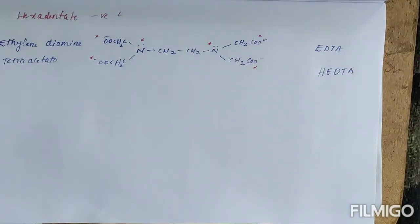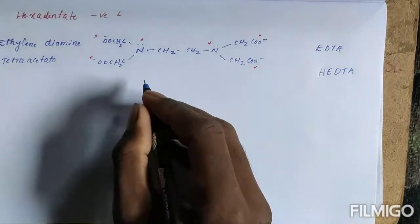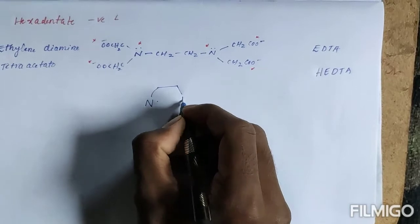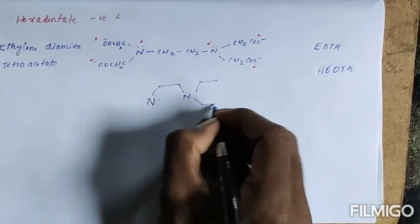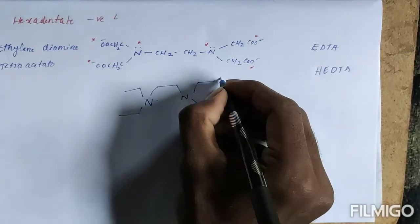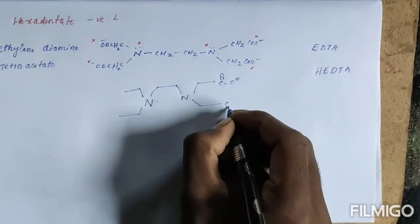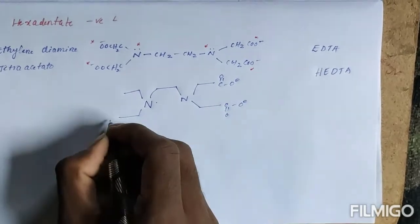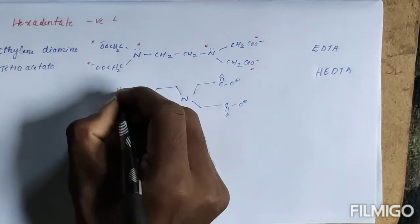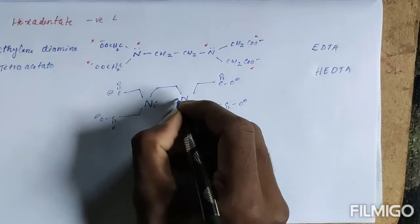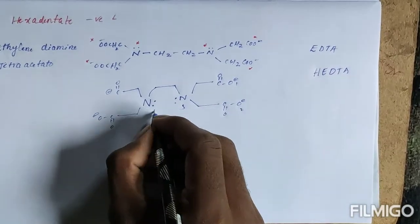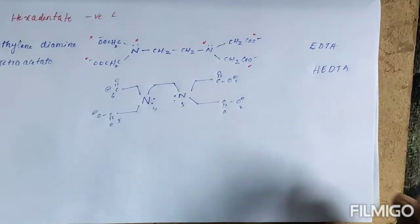For easy remembering, I can represent this structure as I can write this structure like this: CH2COO negative, CH2COO negative, CH2COO negative. These are the donor atoms: one, two, three, four, five, six. That's why it's hexadentate ligands.